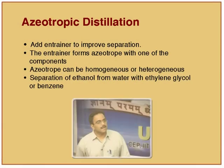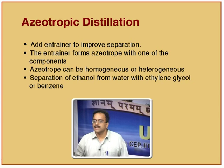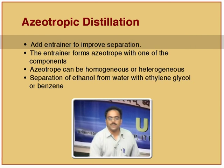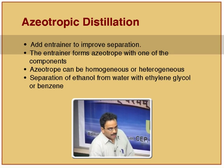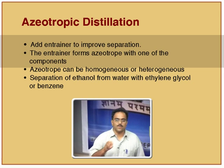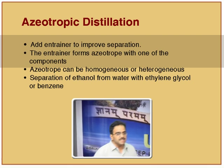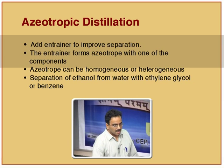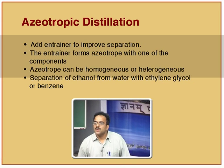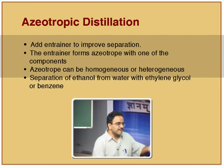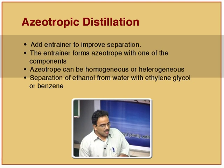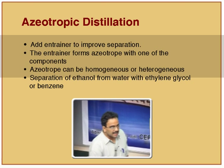Azeotropic distillation is an enhanced technique: when a mixture is difficult to separate — either because it forms an azeotrope or because boiling points are very close — an external component called an entrainer or azeotropic agent is added. The entrainer forms an azeotrope with one (or both) of the components, improving the separation. Heterogeneous azeotropes are generally preferred because breaking the azeotrope formed during separation is easier when two liquid phases are present — this will be explored in detail in later lectures.